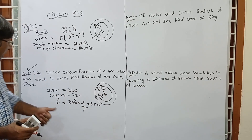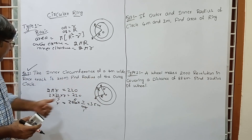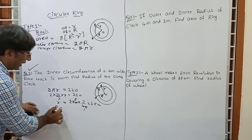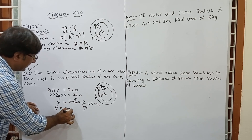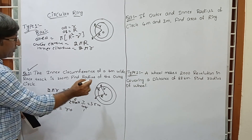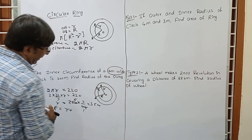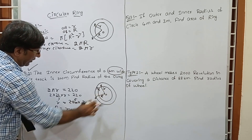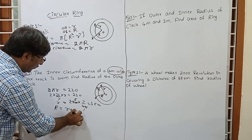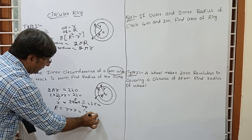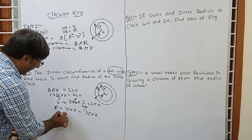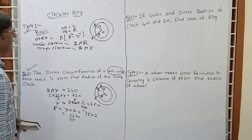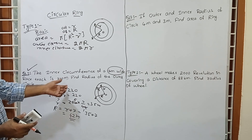r is the inner radius. We have to find the radius of the outer circle, that is capital R. Capital R equals r plus width of the race track. The width is given as 7 metres. So R equals 35 plus 7, which is 42 metres. This is our right answer.